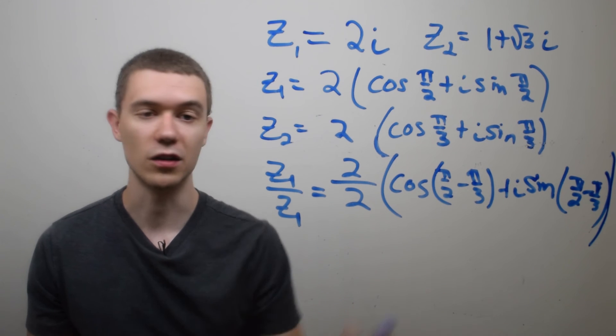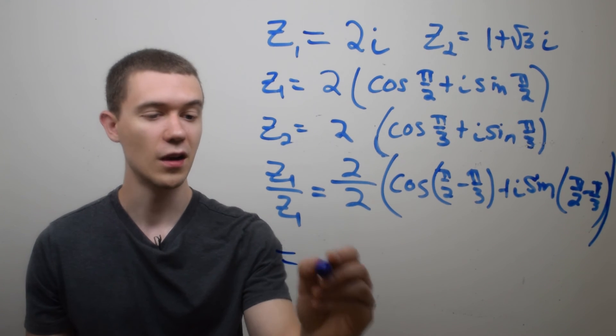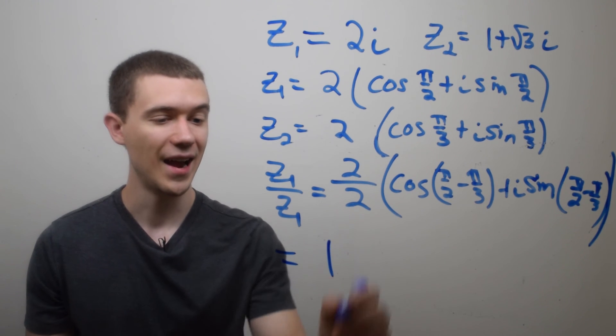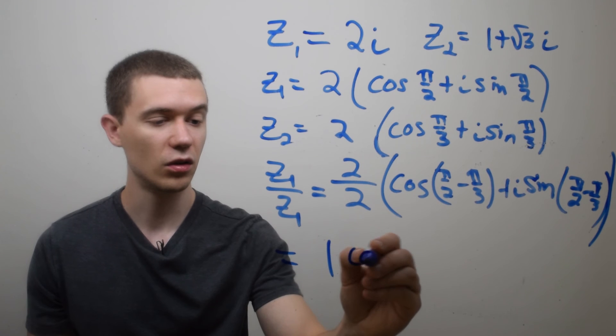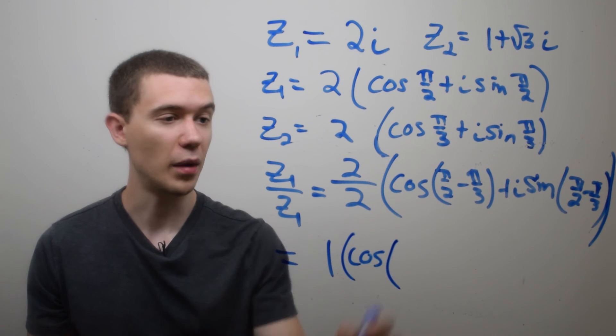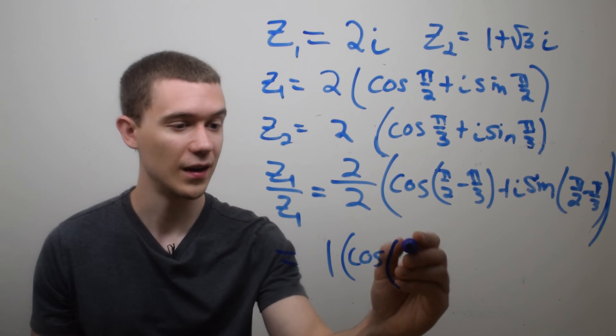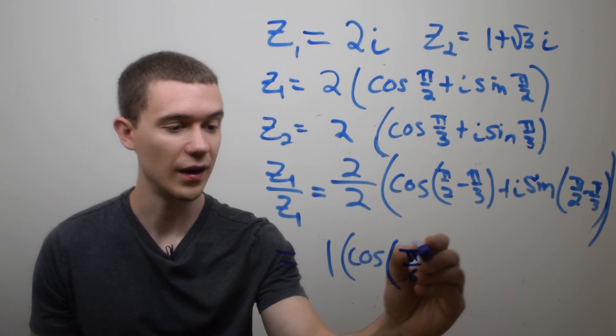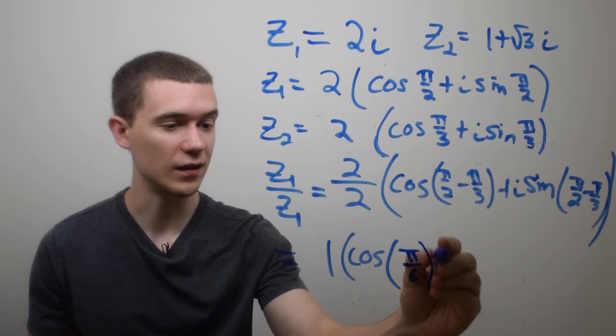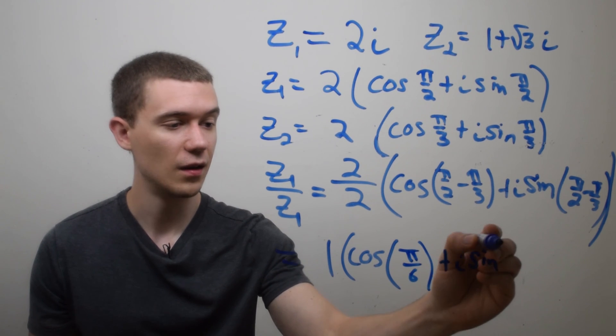So you've got to do a little bit of fractions, I know everybody just loves fractions. 2 over 2 is 1, and then I'm going to have cosine of π/2 minus π/3. That's 3 sixths, let's see, 3 sixths π minus 2 sixths π is 1 sixth π. So π/6 plus i sine of π/6.